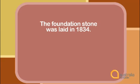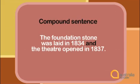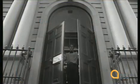Listen to this: 'The foundation stone was laid in 1834 and the theatre opened in 1837.' You can join two simple sentences together with AND. The two sentences are: 'The foundation stone was laid in 1834' and 'The theatre opened in 1837.' Joining them with AND gives you a compound sentence.